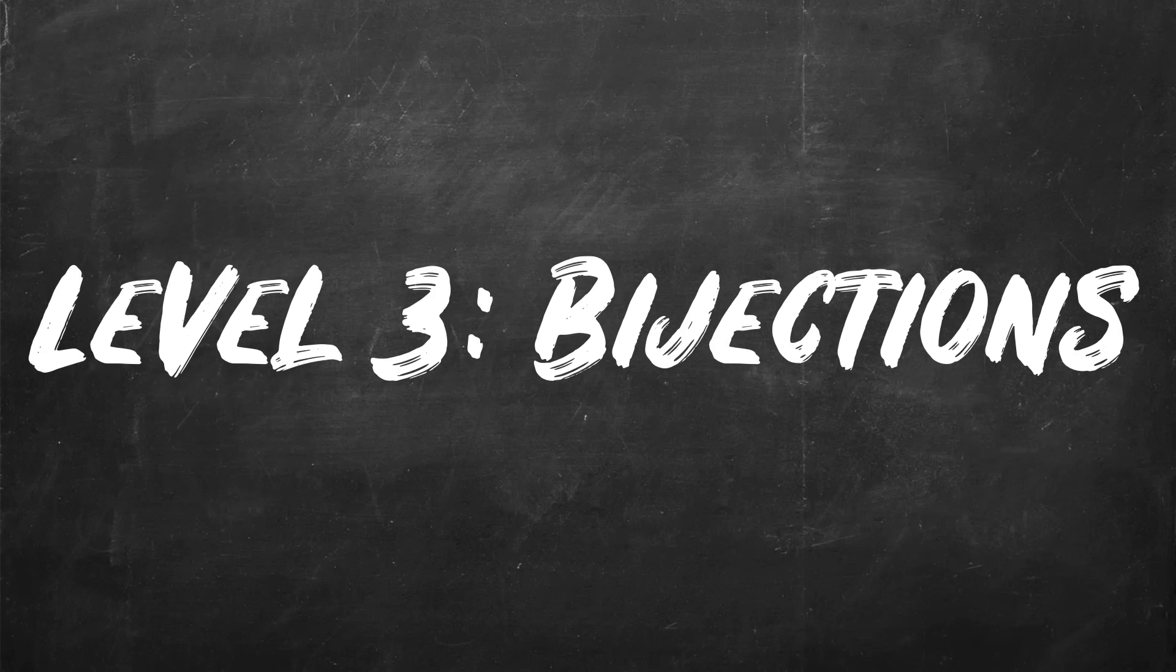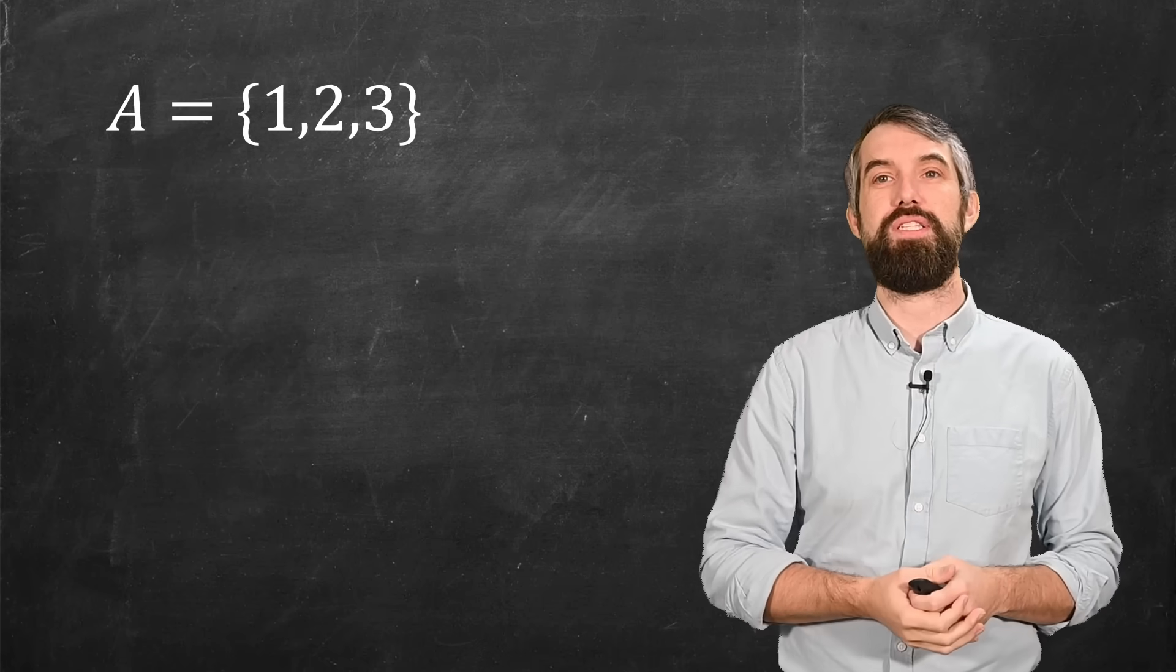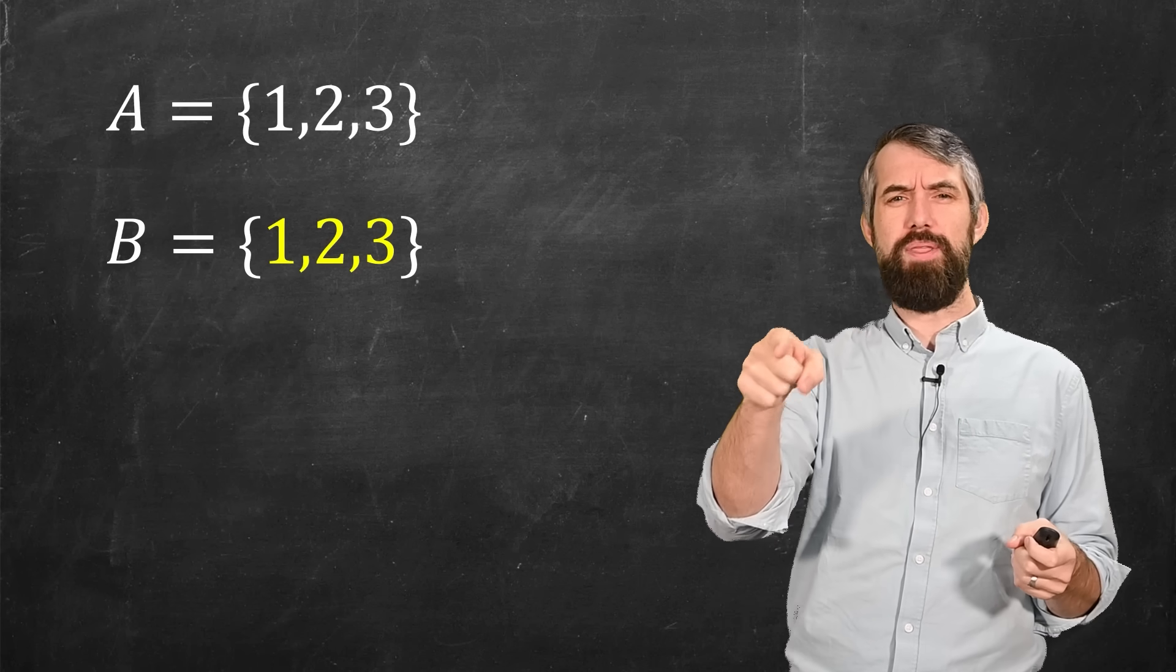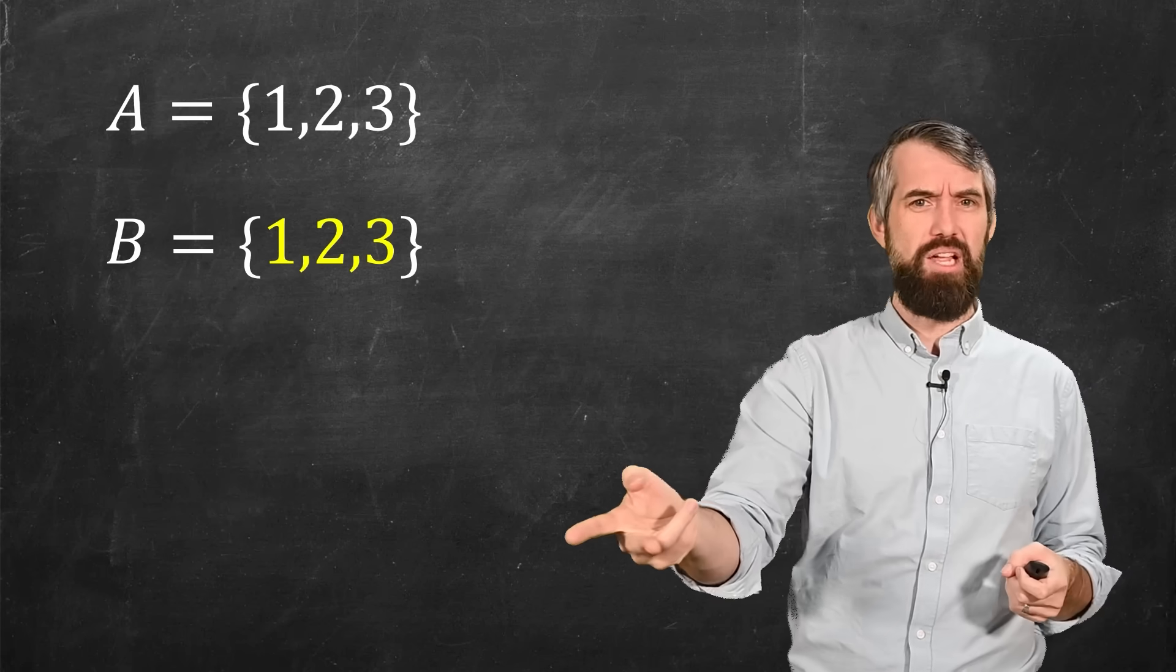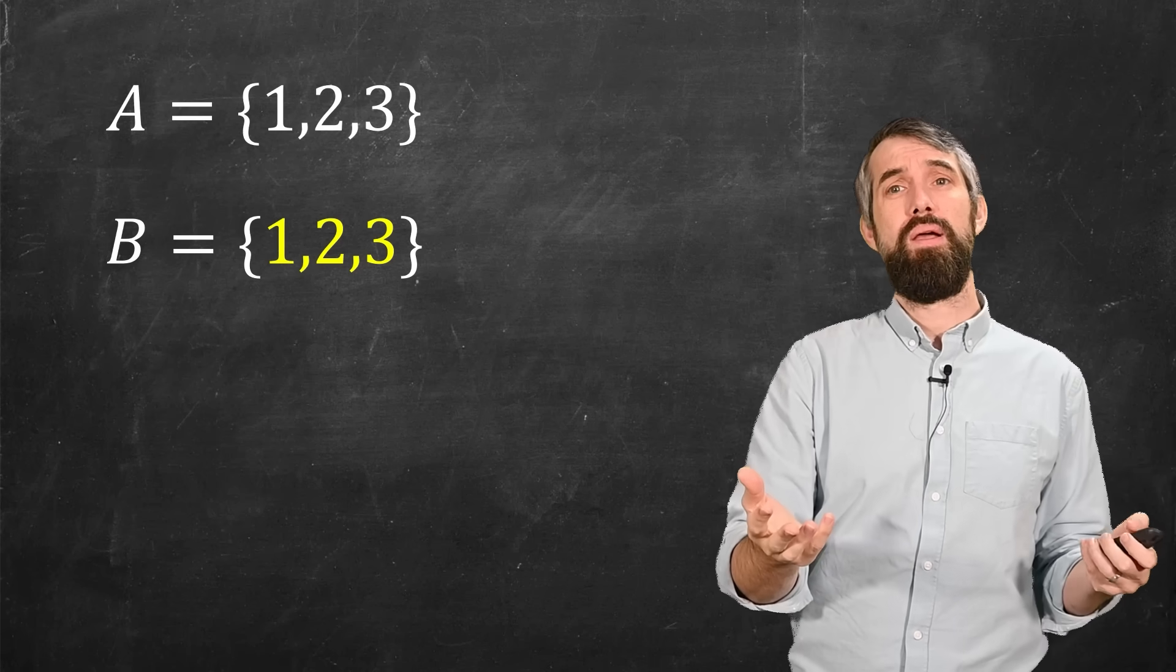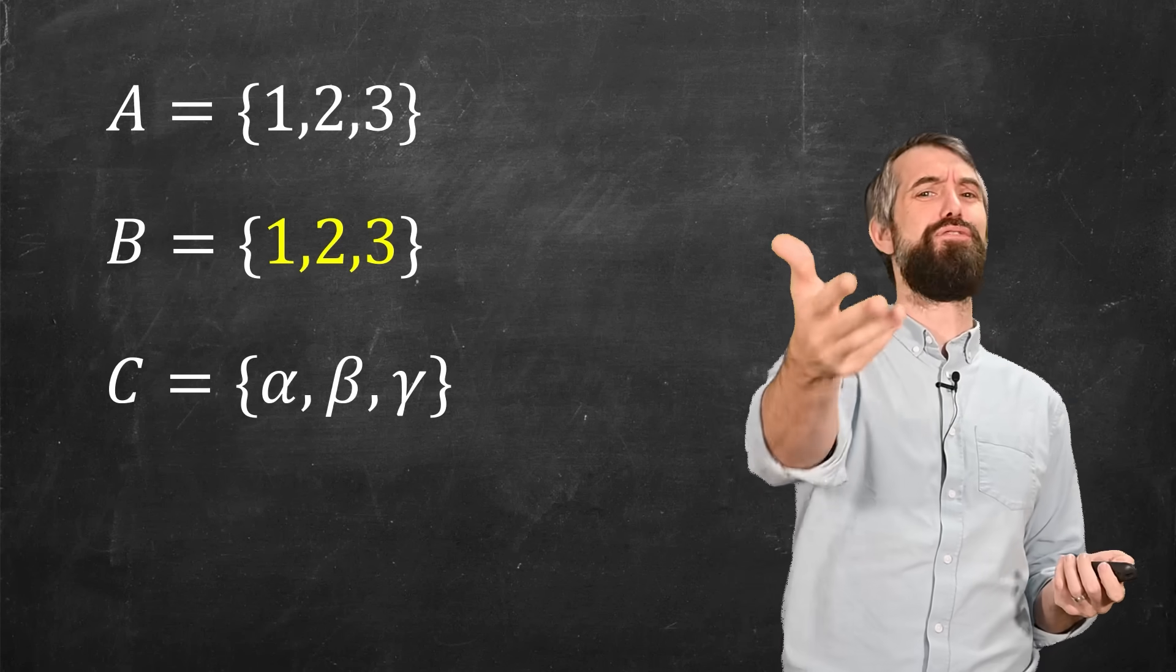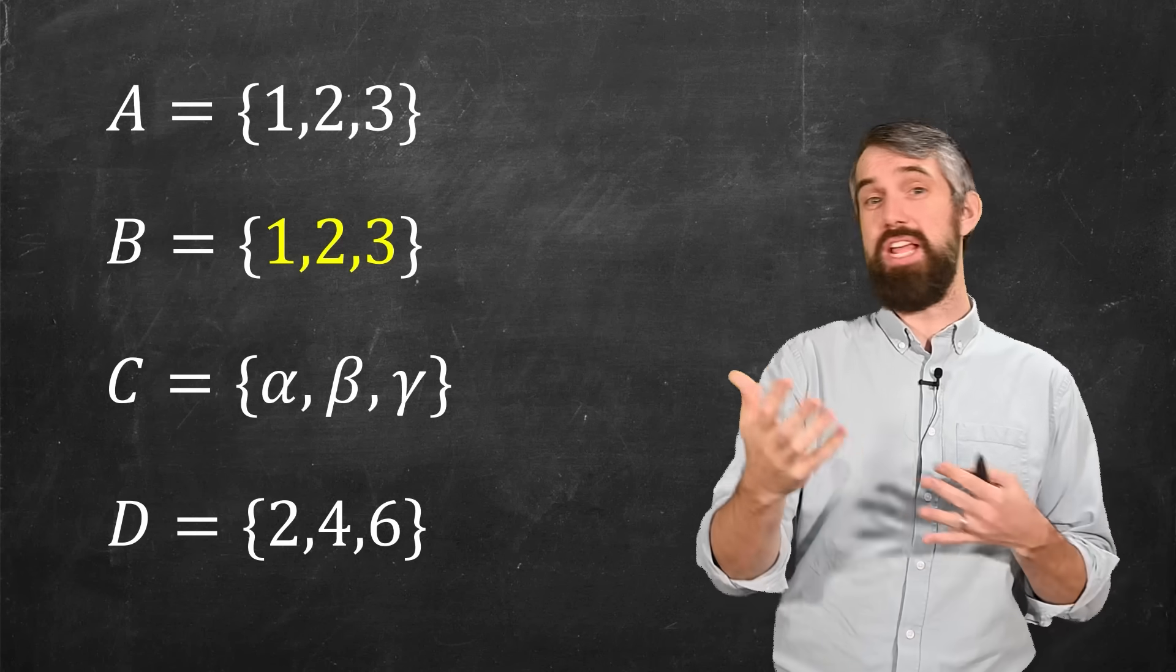Level 3 is called bijections. To introduce this, I want to contrast a few different sets. I want you to contrast the set A = {1,2,3}, or set B, which is also {1,2,3} but painted a different color, or maybe spoken in a different language, or represented in some way that was a little different. Probably you think that's the same. What about if instead of {1,2,3}, I just put placeholders {alpha, beta, gamma}? Or what if I put different numbers like {2,4,6}? So which of these should I think of as the same, which should I think of as different? For example, if I look at A and D as subsets of the integers, I mean they're different subsets, but there is a function that goes between them, which is multiplication by 2.